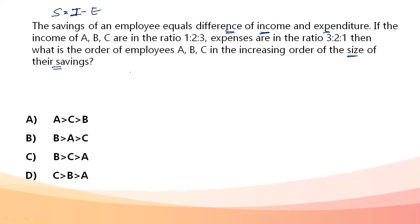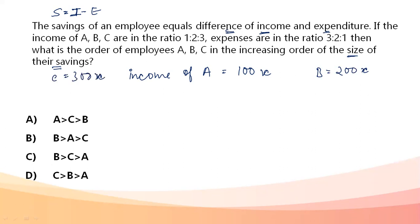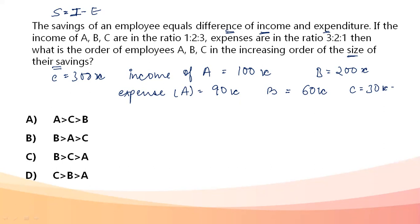Let the income of A be 100X. Then B becomes 200X and C becomes 300X. For expenses, since the ratio is 3:2:1, let A's expense be 90X, B's becomes 60X, and C's is 30X. A's saving is income minus expenditure: 100X minus 90X equals 10X.